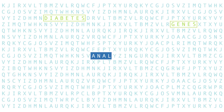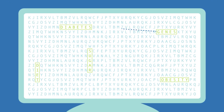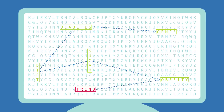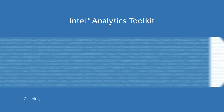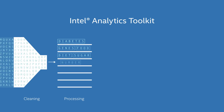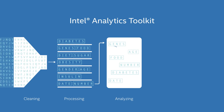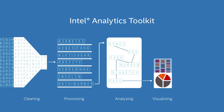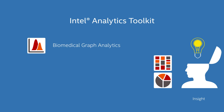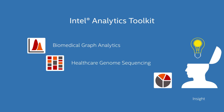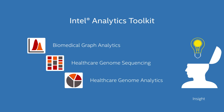Graph analytics is a powerful new way to discover valuable hidden connections, relationships and trends, where connections and relationships are realized through statistical analysis. That's why we introduced Intel Analytics Toolkit, so users can visualize and identify meaningful relationships from large, structured and unstructured data sets. This can enable life-enhancing discoveries using large-scale biomedical graph analytics, health care genome sequencing and health care genome analytics.